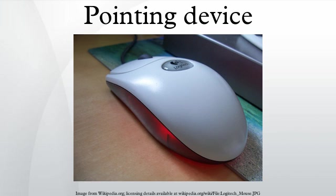Pointing stick: A pointing stick is a pressure-sensitive small nub used like a joystick. It is usually found on laptops embedded between the G, H, and B keys. It operates by sensing the force applied by the user. The corresponding mouse buttons are commonly placed just below the space bar. It is also found on mice and some desktop keyboards.